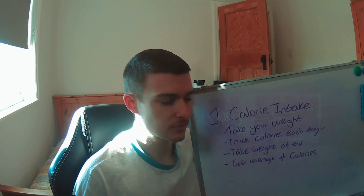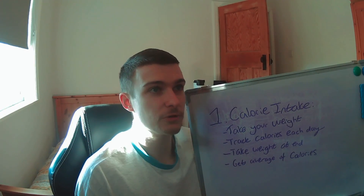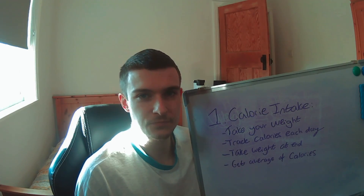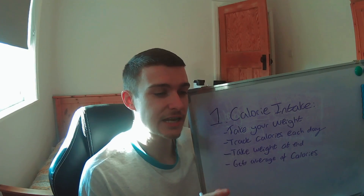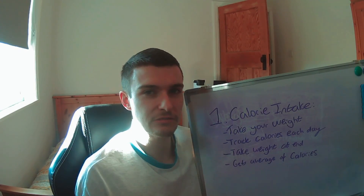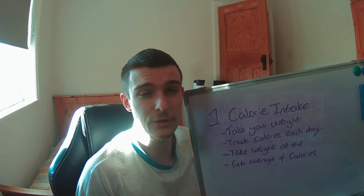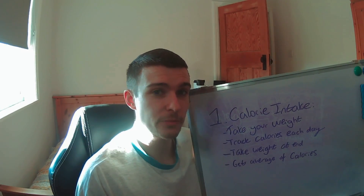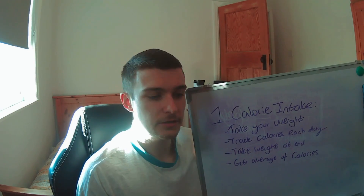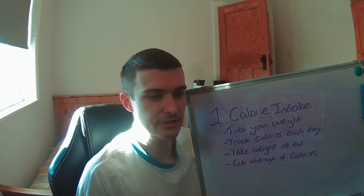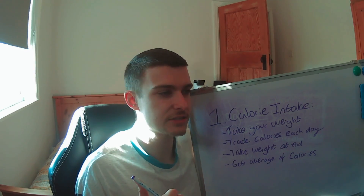Over that week — if your calories on average were 2,000 — you could estimate that sitting on 2,000 calories with your given expenditure, you're dropping one pound a week. If you're happy dropping one pound a week, you just need to keep your calories at 2,000. But if you want to adjust — say your weight held, meaning you're not in a deficit, or you want to go from one pound to two pounds a week — you need to increase the calorie deficit.